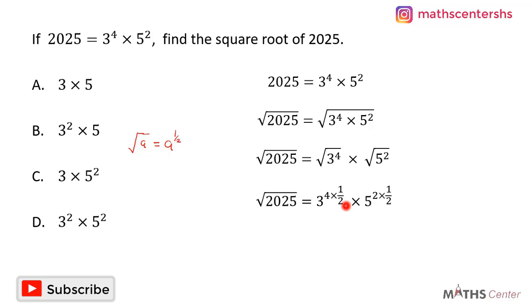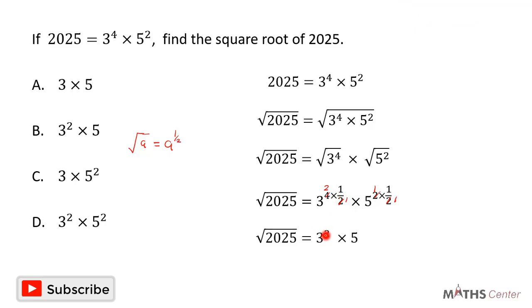When we do this, we can see that the 2 in the denominator will cancel: 4 divided by 2 gives us 2, so we are left with 3 exponent 2. Similarly, 2 divided by 2 gives us 1, so we are left with 5 exponent 1, which is the same as 5.